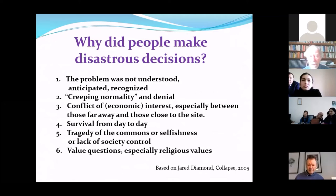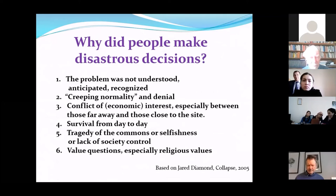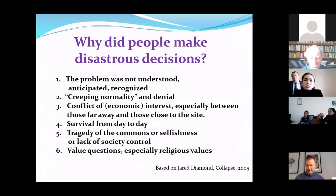Why did they make such disastrous decisions leading to societal collapse? Well, perhaps they did not understand — it was considered normal, which is quite much the situation we are in today. There was a conflict of interest, especially between economic interests. There was survival from day to day, especially in developing countries — if you want to survive to tomorrow, perhaps you have to take the only fish that's there. And of course the tragedy of the commons, as mentioned. And again there are value questions — some religious communities don't care about anything else but what they think their God tells them to do.